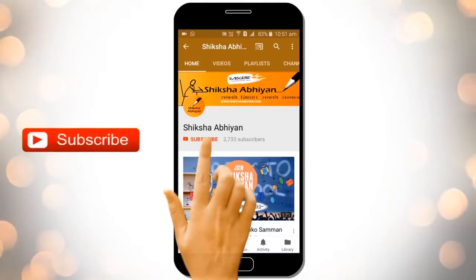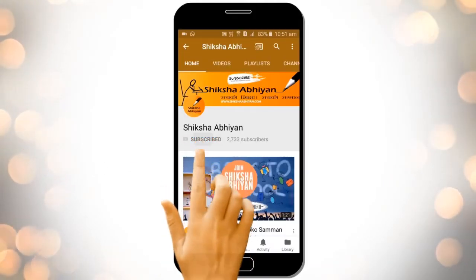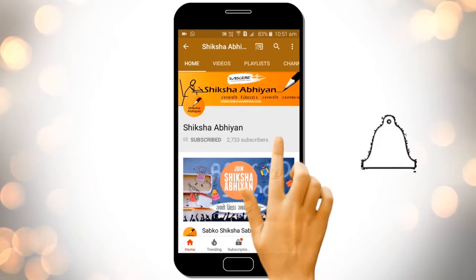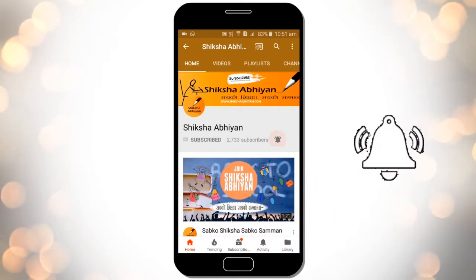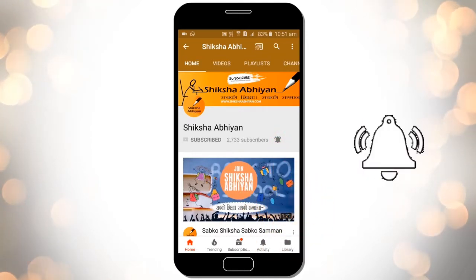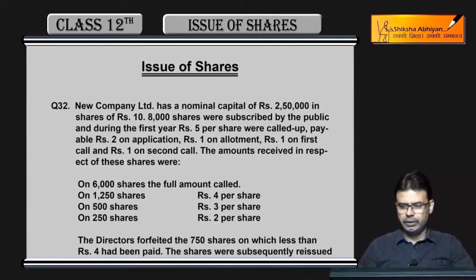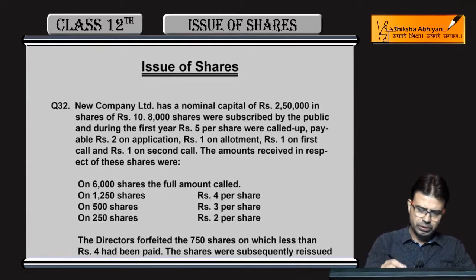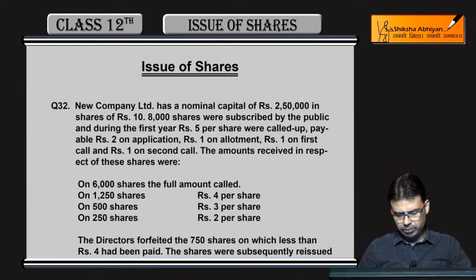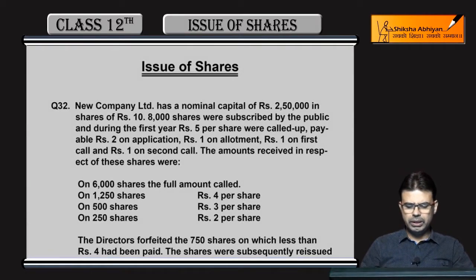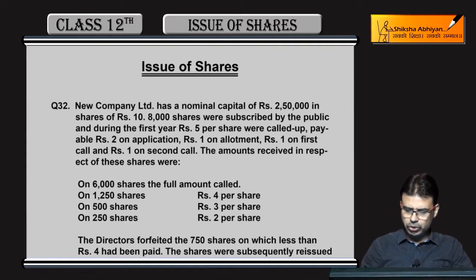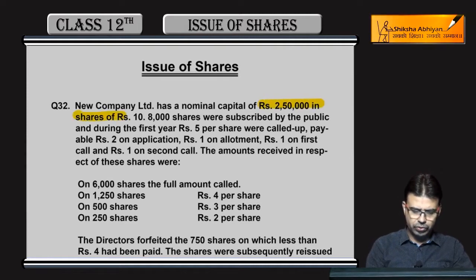Subscribe to our channel by clicking the subscribe button, click the bell button and enjoy the latest uploads from our channel. Next question — good question. Have New Company Limited has a nominal capital of rupees 2,50,000 in shares of rupees 10 each.